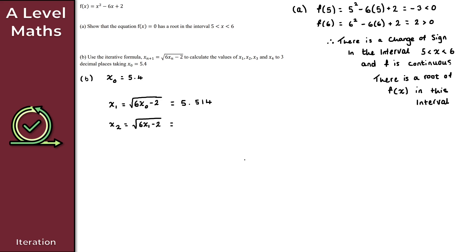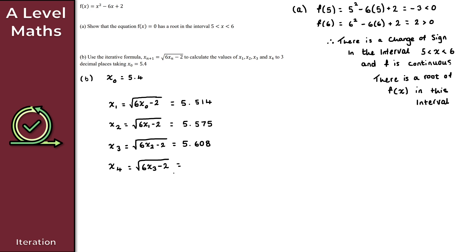Pressing enter again gives x₃, which — if we were doing this by hand would be the square root of 6 times x₂ minus 2 — rounded to three decimal places is 5.608. Finally for x₄, equal to the square root of 6 times x₃ minus 2, pressing enter one more time gives 5.626. That gives the solution to part b and the solution to question one.